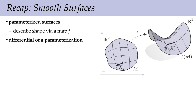Another important object we can associate with a parameterized surface is its differential, written as df. The key idea is that the differential takes a tangent vector x and pushes it forward onto the surface. If you imagine that this tangent vector was a little arrow drawn with an ink pen on the domain, and the domain is a piece of rubber that gets stretched out into space, then df of x tells you where that arrow ends up in space — what direction it points. We call that the push-forward of a tangent vector.